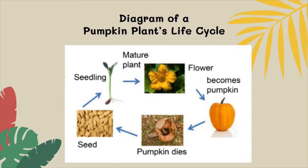Here we are going to look at a diagram of a pumpkin plant's life cycle. The first stage is a seed. The second stage is a seedling. The third stage is a mature plant. Then the fourth stage is a full grown pumpkin plant. Then the pumpkin plant dies and the life cycle starts all over again.